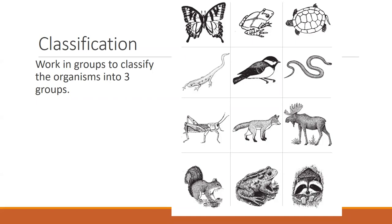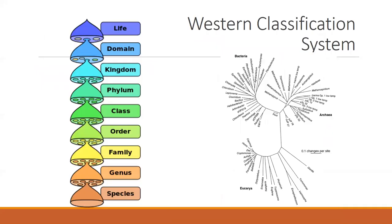However, you could classify organisms completely differently — things that fly in one category, things that jump in another, things that live in treetops together. There's actually a diversity of ways people classify living things; this is an anthropology topic. We have a tendency to classify things, but how we classify them has varied greatly across cultures. In Western science we came up with the Linnaean classification system, which you likely learned in life science or biology.